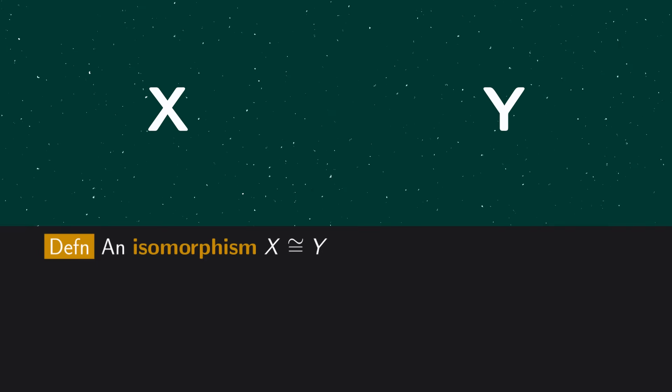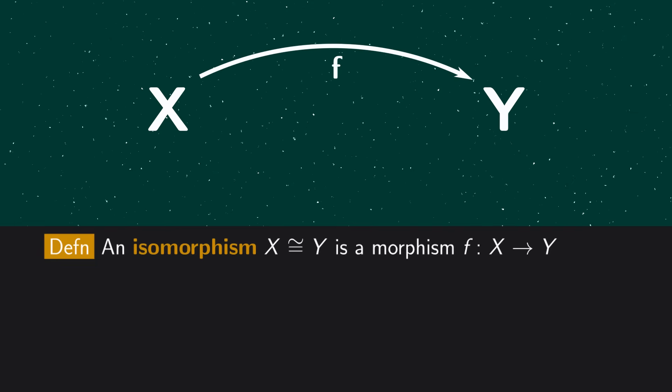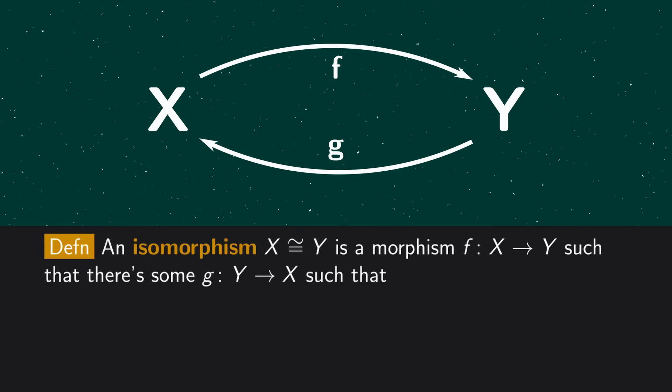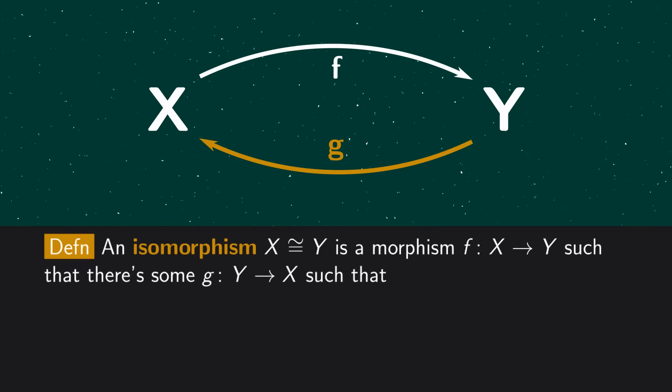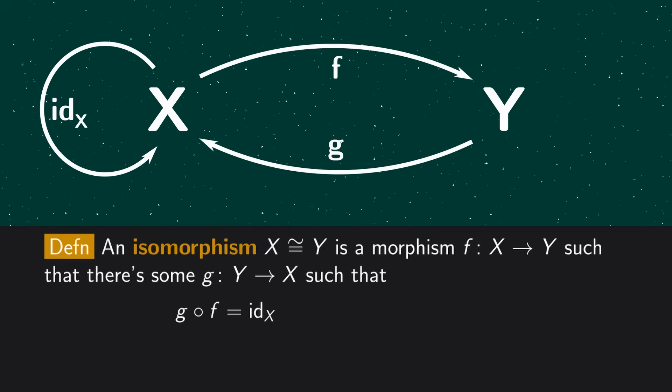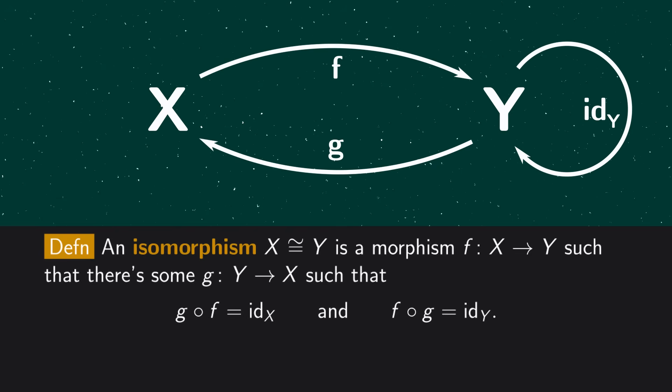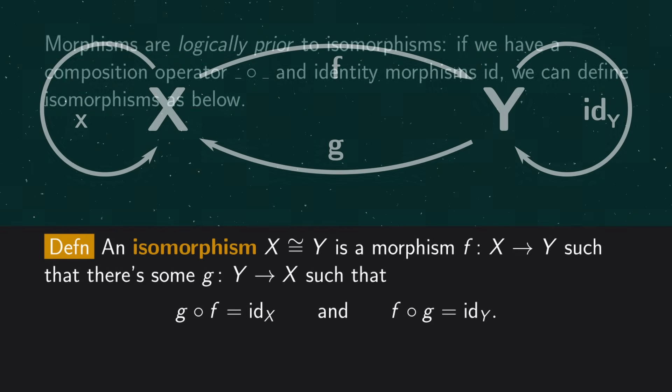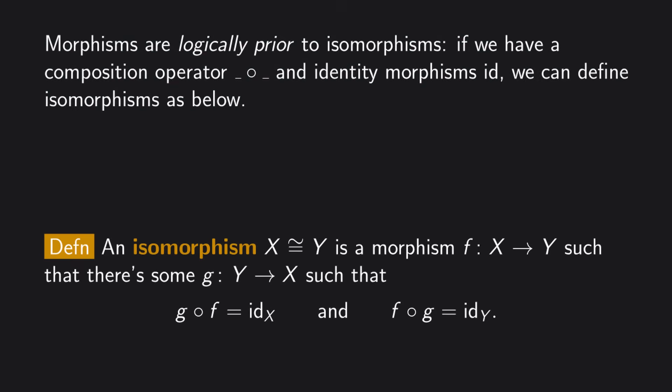So we can make the following definition. An isomorphism between structures X and Y is a morphism F from X to Y, such that there's another morphism G from Y to X, where we can compose F with G to get the identity morphism on X, and if we compose G with F, we get the identity morphism on Y. So, the category theorists noted, the reason every notion of structure comes equipped with a notion of isomorphism is because actually every notion of structure comes with a notion of homomorphism, and then you can use this definition to define isomorphism in terms of homomorphisms.